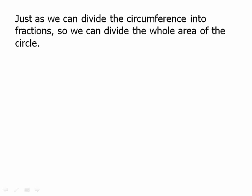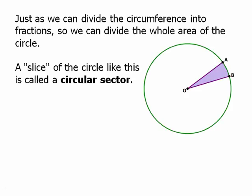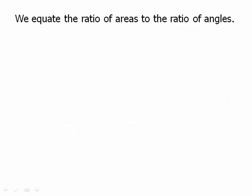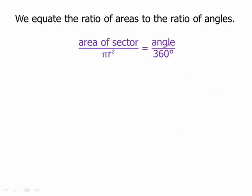Just as we can divide the circumference into fractions, so we can divide the whole area of the circle. A slice of the circle like this is called a circular sector — some people like to think of it as a slice of pie or pizza. To find the area of a sector, we set up another part-to-whole proportion, in which the area of the sector is part of the area of the whole circle, πr². Don't simply memorize a formula; think about the logic: how much of the circle do we have? We set up the ratio for the angles and the ratio of the areas, and set them equal.